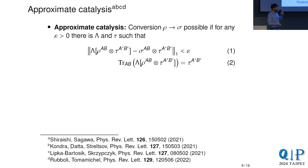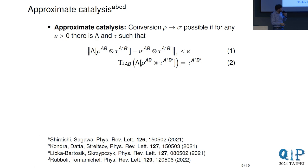For a fully rigorous definition: rho can be transformed into sigma with approximate catalysis if for any epsilon there is an LOCC protocol lambda and a catalyst state tau such that lambda acting on rho⊗tau is, in trace norm, very close to sigma⊗tau — smaller than epsilon. Additionally, if you trace out the primary system AB from the post-LOCC state, the catalyst state is unchanged. These two conditions define approximate catalysis.